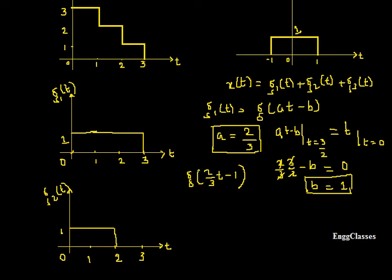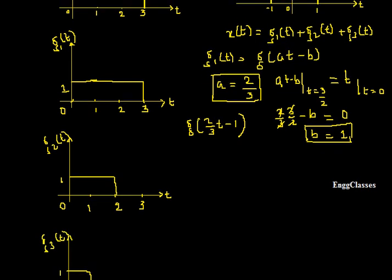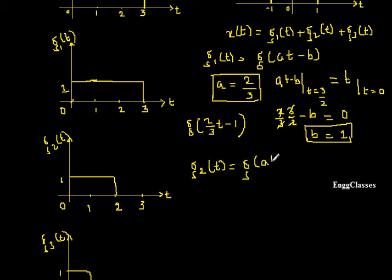Even if that wasn't fully clear, I will make you understand while writing the expression for g2(t). We haven't finished yet — I also need to write the expression for g2(t), which is again a shifted and scaled version of g(t), so g2(t) = g(at − b). I need to find a and b.